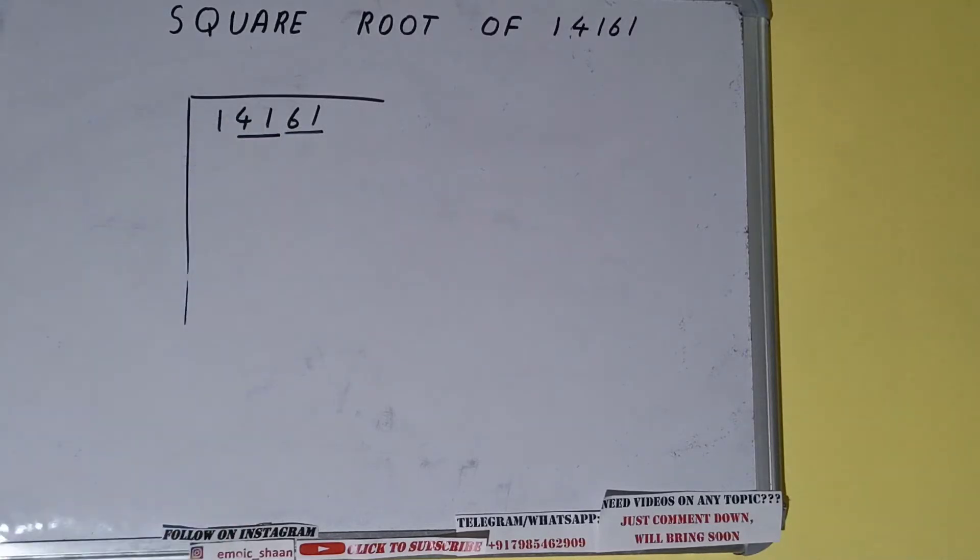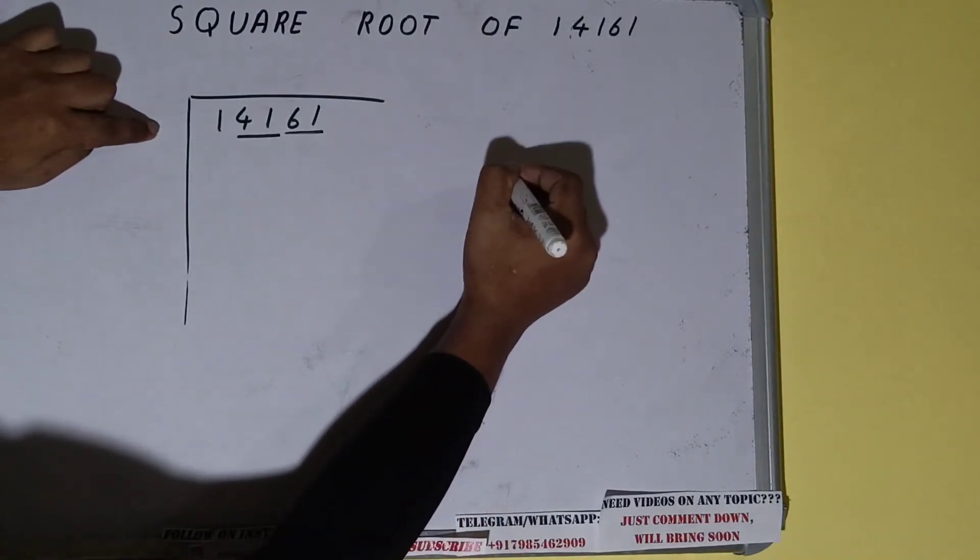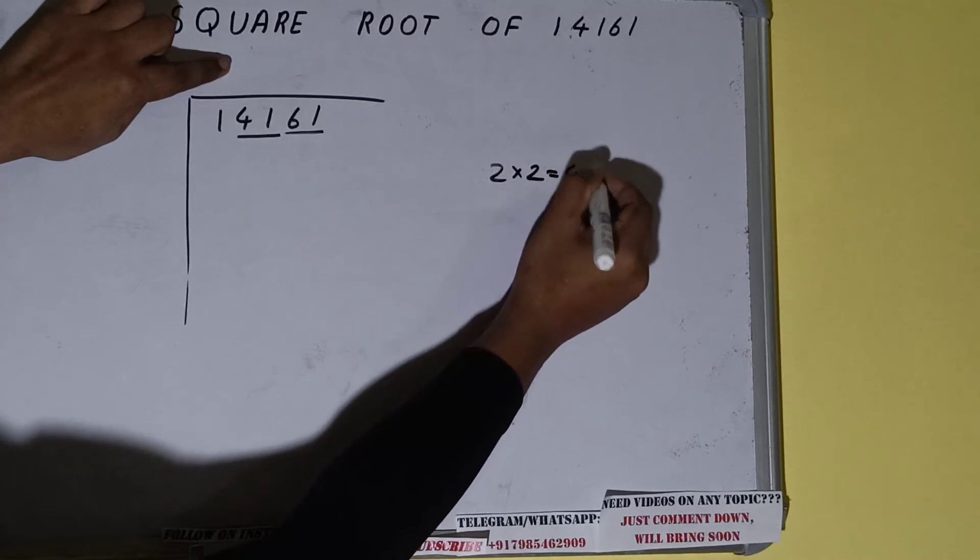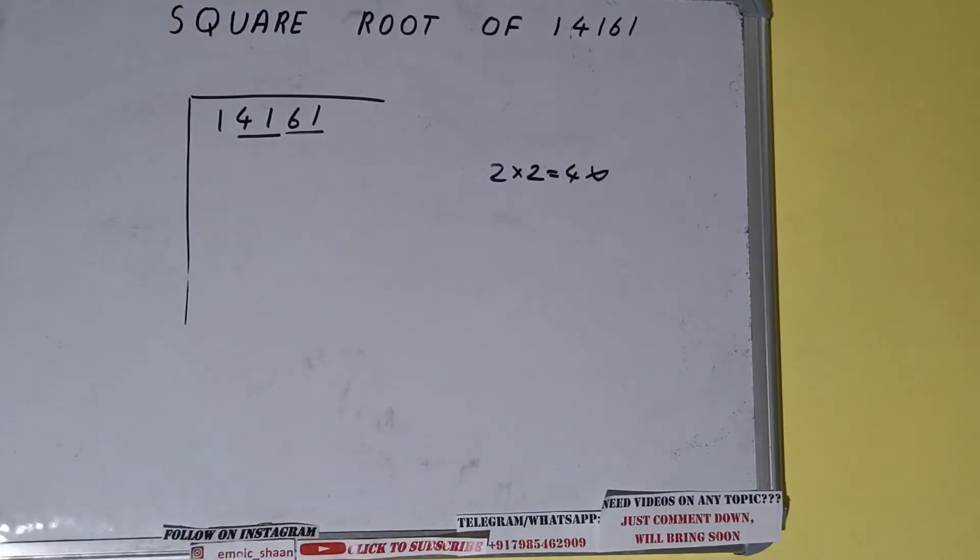The rule is whatever number we write here, we have to write here also. So if we write 2 here and 2 here, we'll be getting 4, which is greater than 1, so we cannot use it.